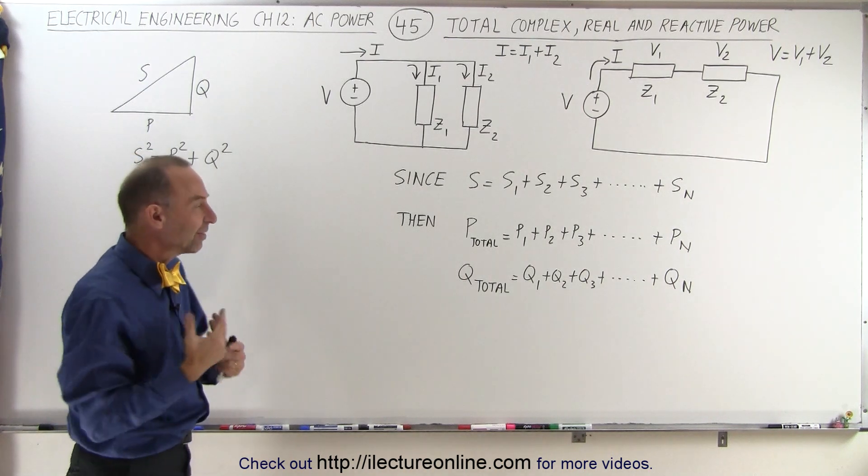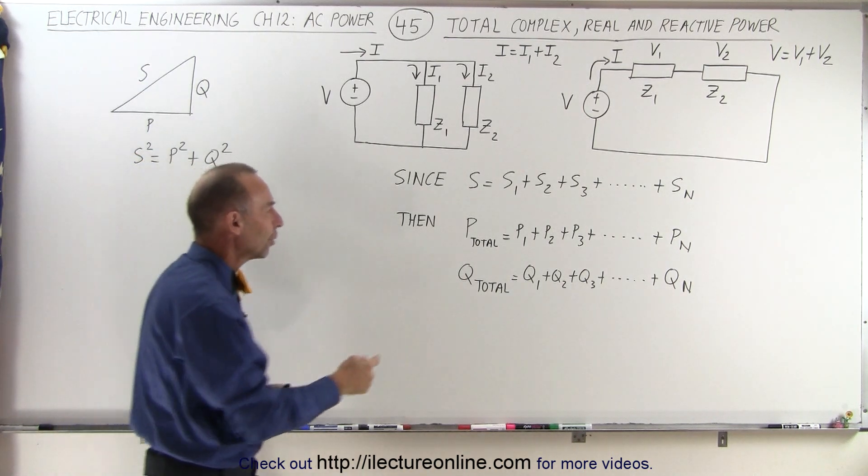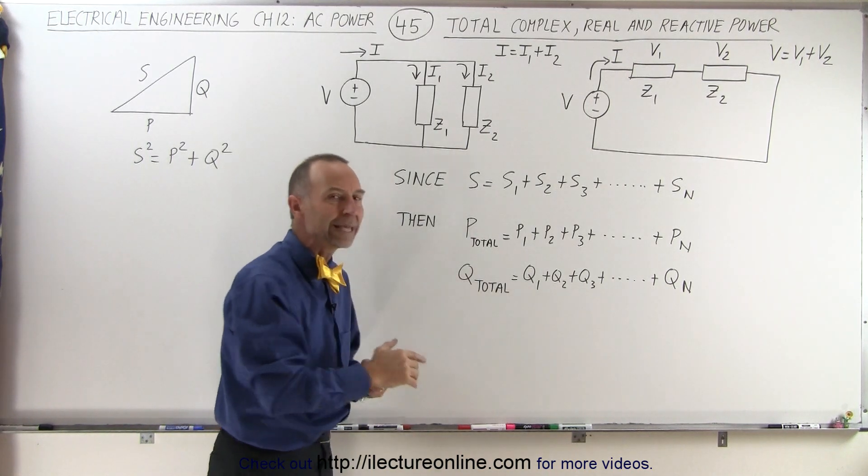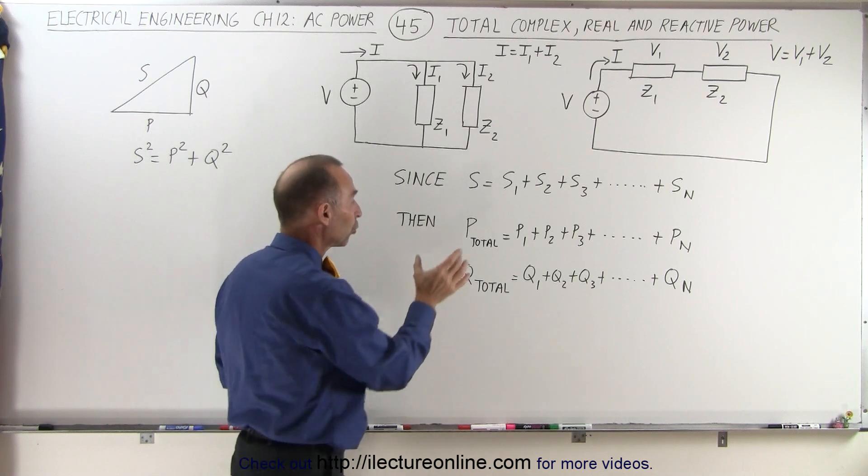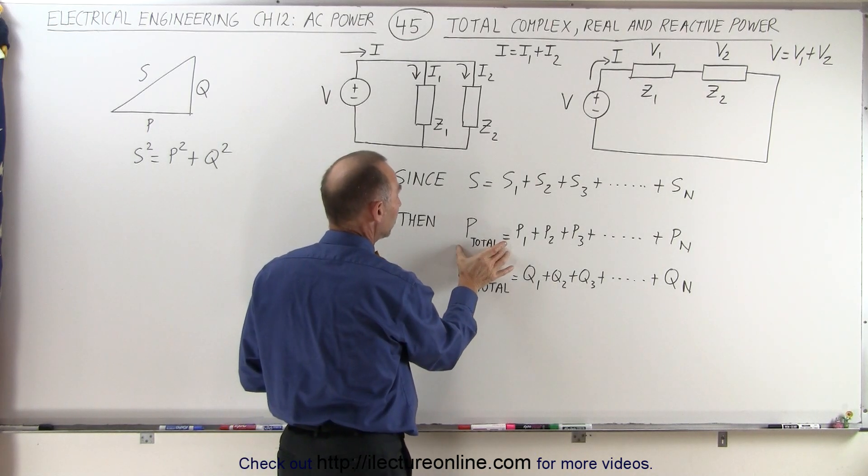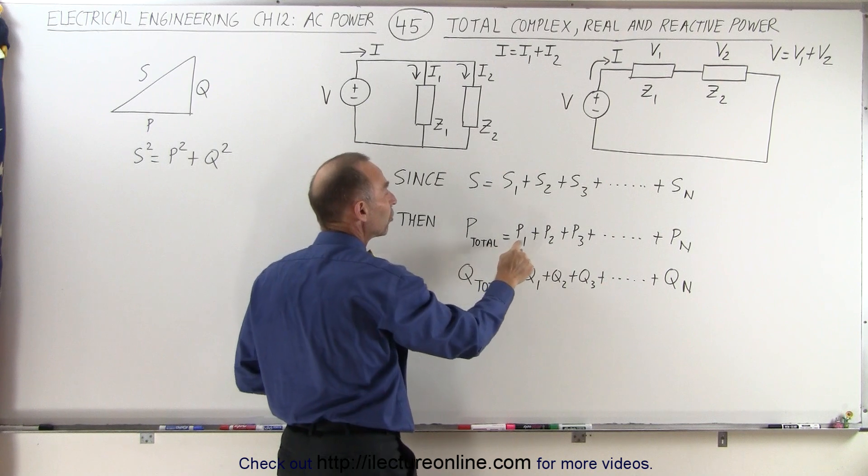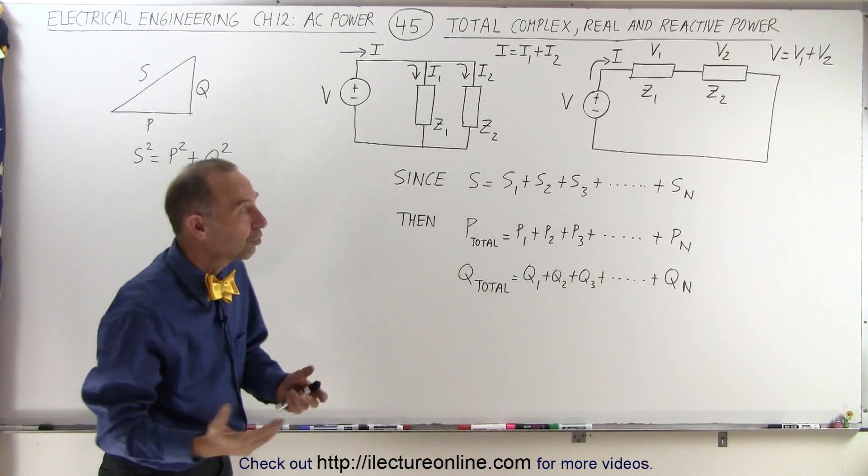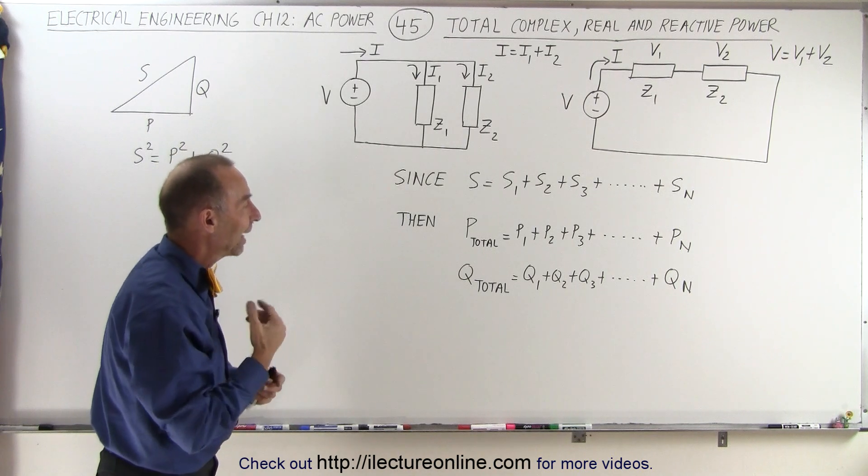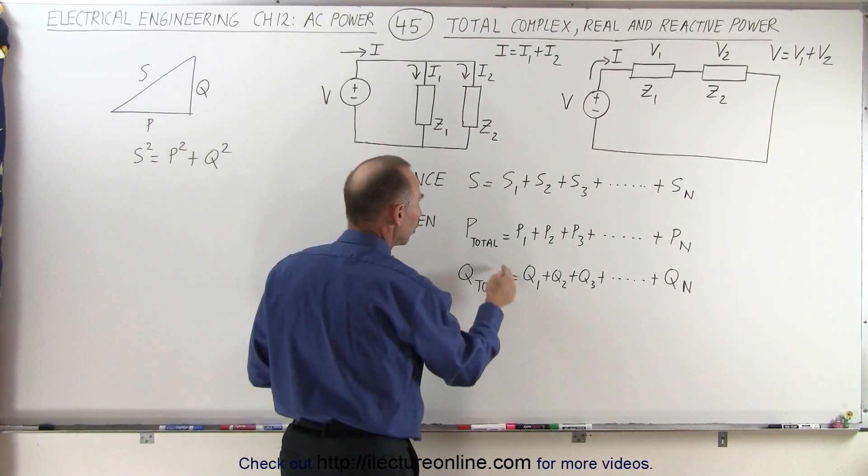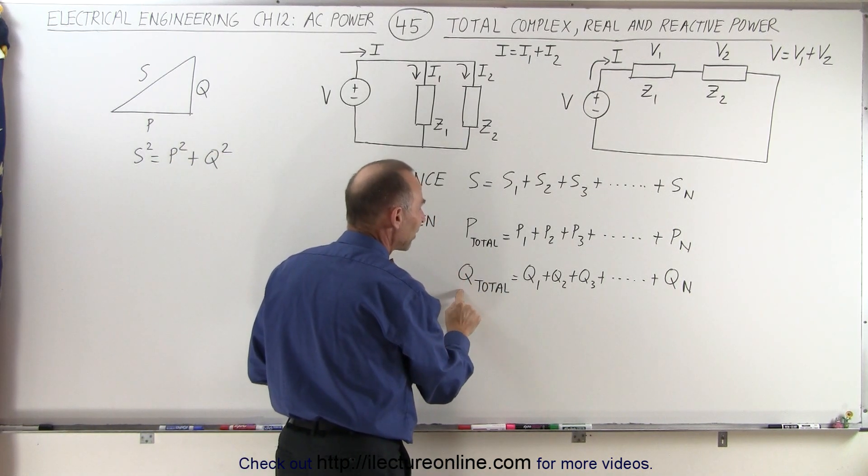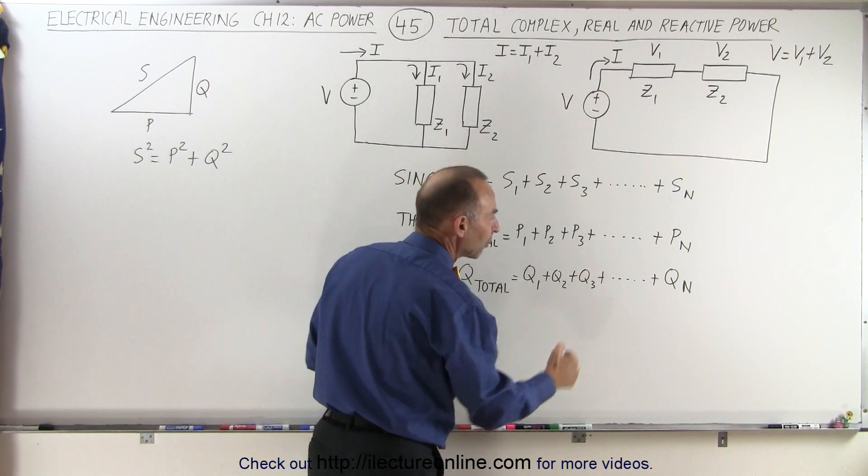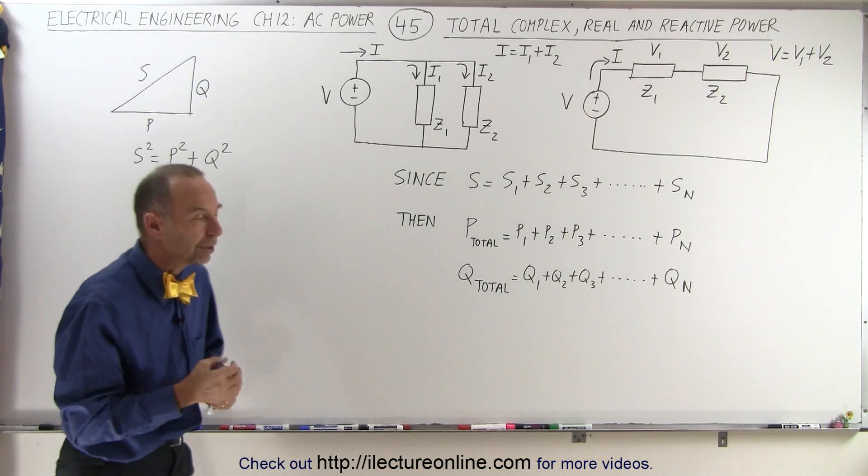And in the same way, we can say the same for the total real power and the total Q, the reactive power. In other words, the total power provided by the source in the circuit is going to be equal to the sum of all the powers dissipated by any of the real parts of any of the impedances. And we know that the total reactive power provided by the source is simply going to be equal to the sum of all the reactive powers of each of the individual impedances.